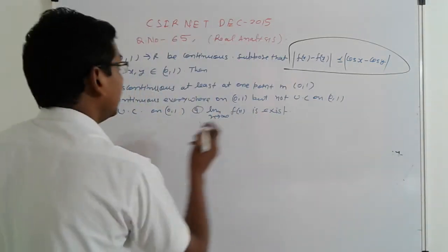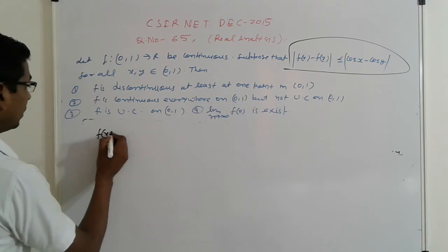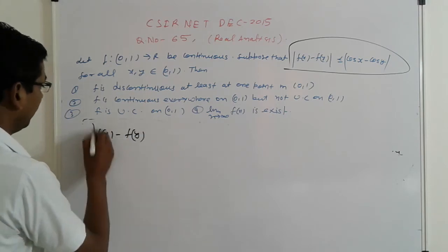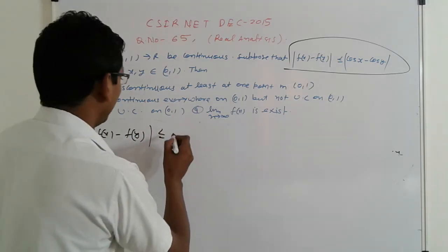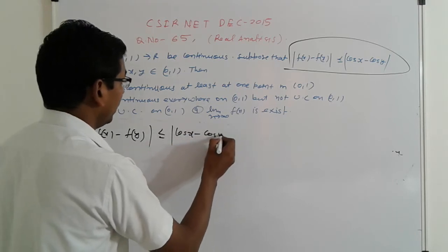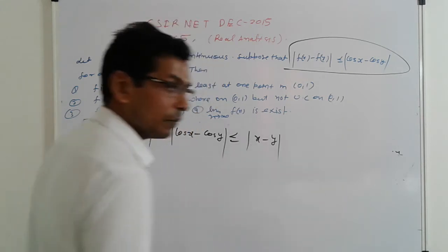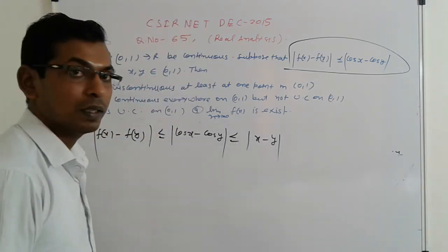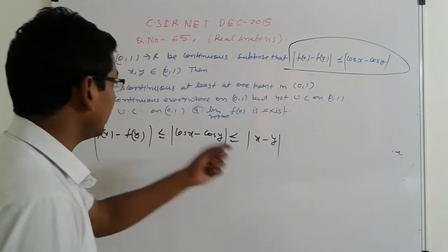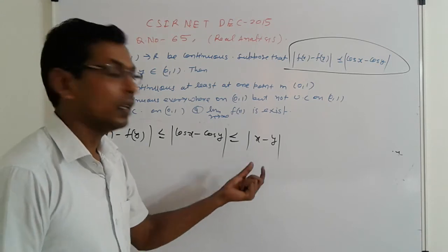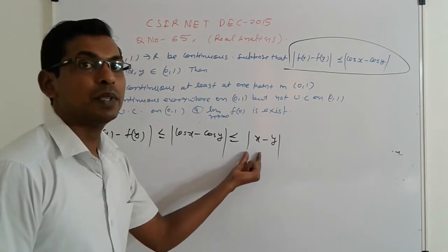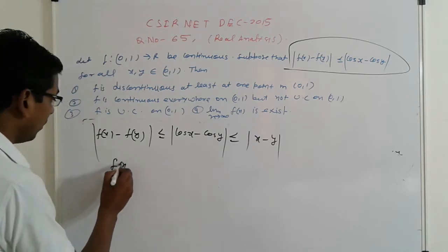Here, friends, it's given that |f(x) - f(y)| ≤ |cos(x) - cos(y)| ≤ |x - y|. This satisfies the Lipschitz condition.